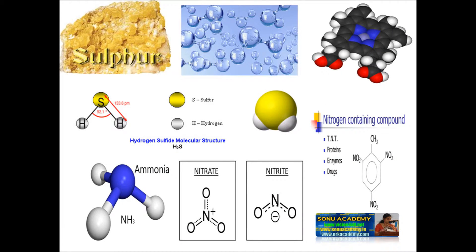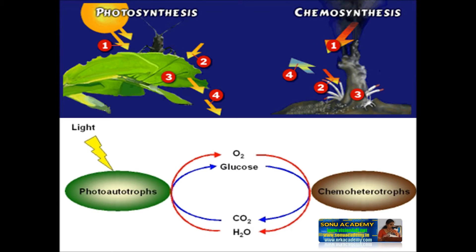Several bacteria are chemoautotrophs and obtain energy by oxidizing simple inorganic compounds such as hydrogen, iron-containing compounds, sulfur, hydrogen sulfide, ammonia, nitrate, and other nitrogen compounds. They require carbon dioxide as the source of carbon atoms.